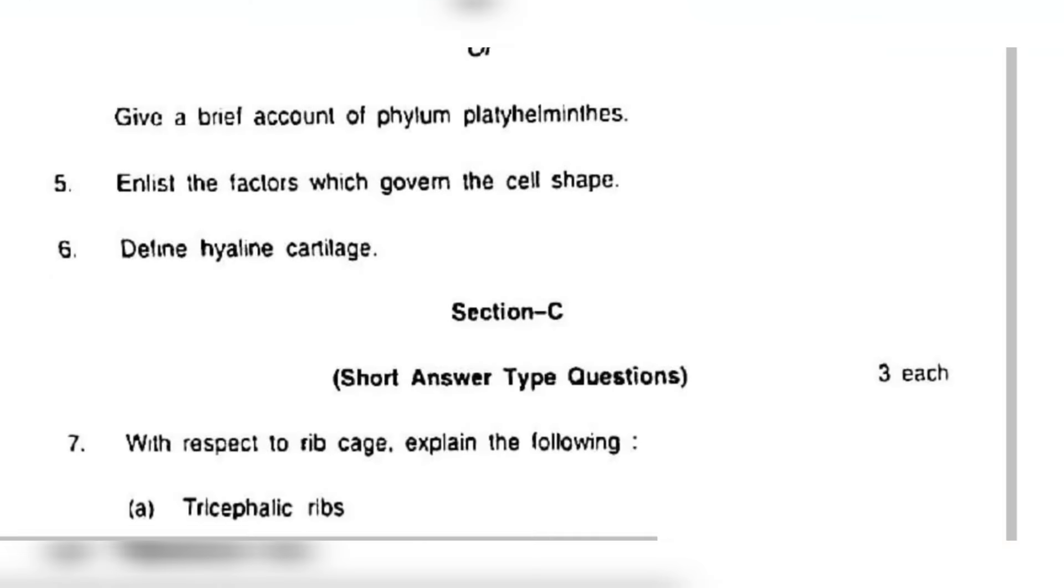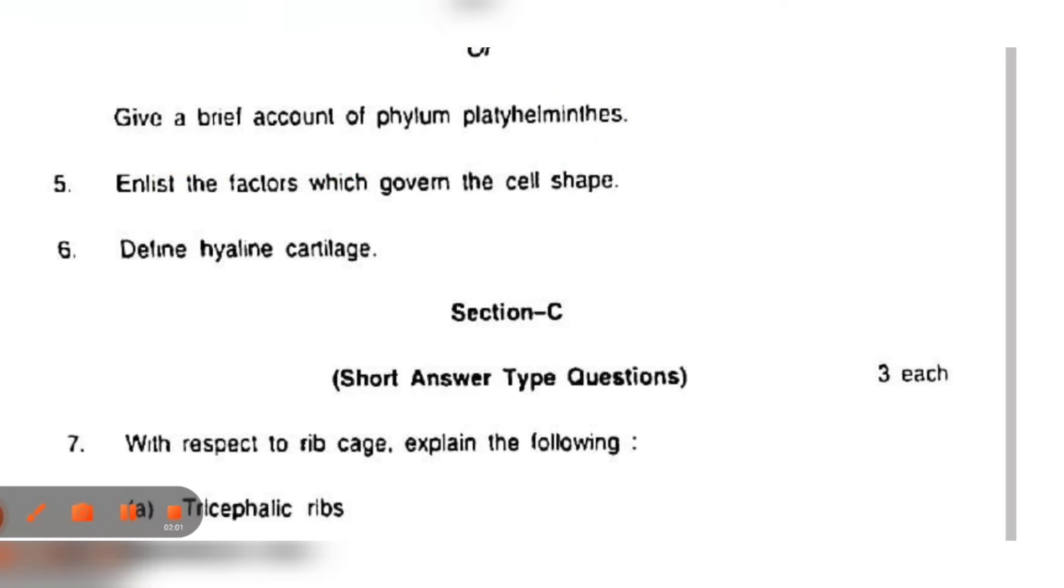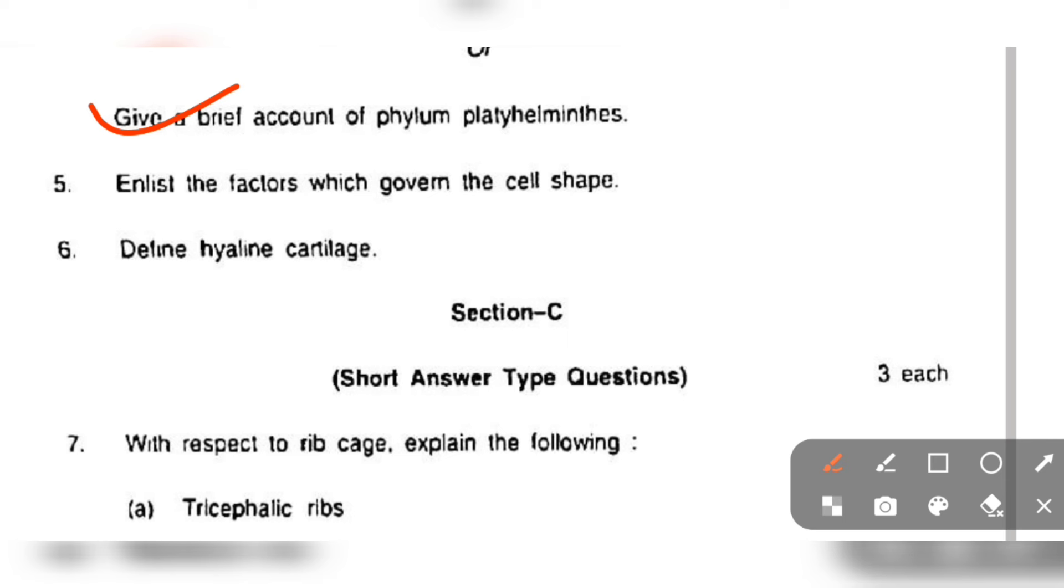Now give a brief account of phylum Platyhelminthes. Either you have to do this or you have to do that. You have to write about Platyhelminthes. You can write this: they are also called flatworms. They are first triploblastic animals. They have leaf-like or ribbon-like body. They have tissue organ level of organization.